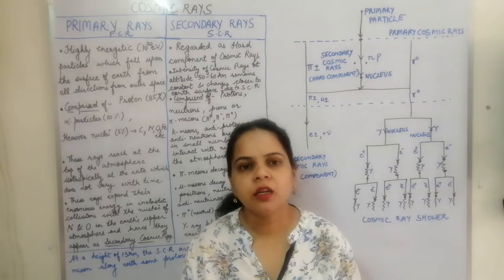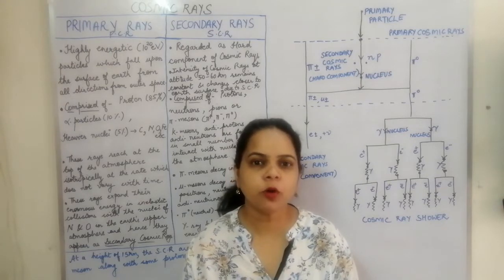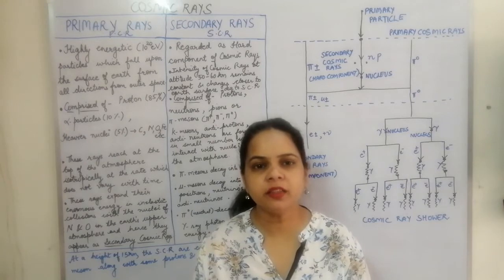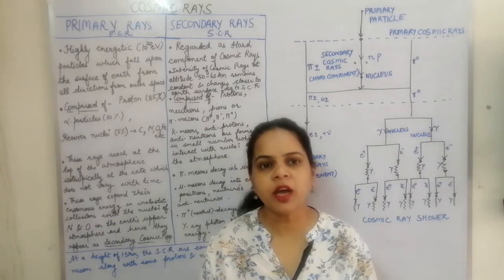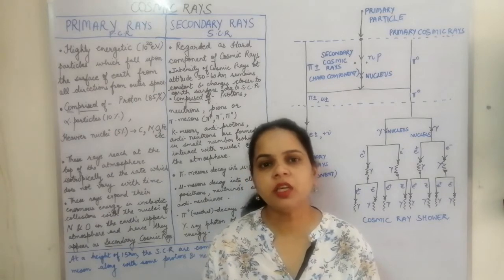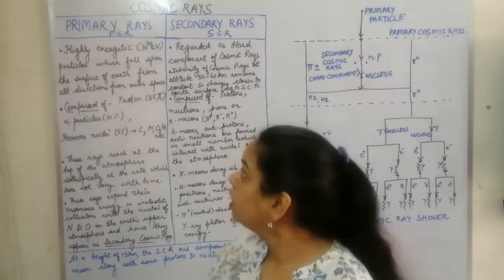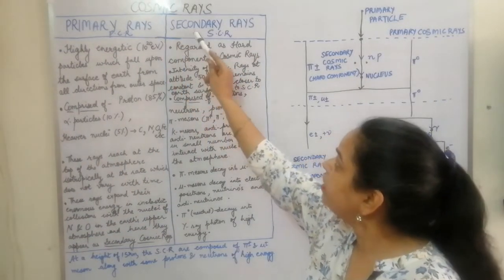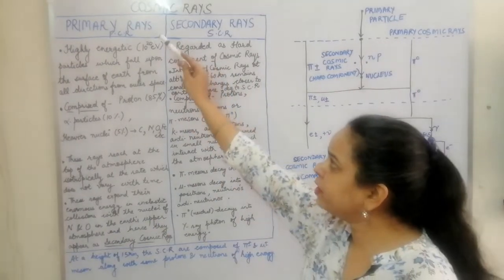Hello students! Now we are going to discuss the types of cosmic rays. Cosmic rays are divided into two types: the primary cosmic rays and the secondary cosmic rays, depending upon the height at which the cosmic rays occur. So the cosmic rays are of two types — the primary rays and the secondary rays.